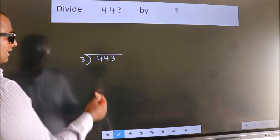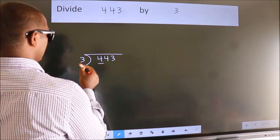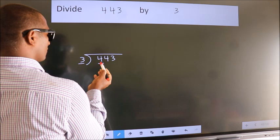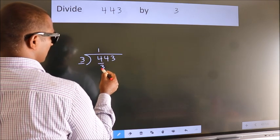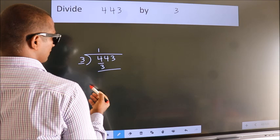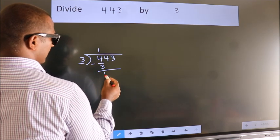Next. Here we have 4, here 3. A number close to 4 in the 3 table is 3 times 1 is 3. Now, we should subtract. We get 1.